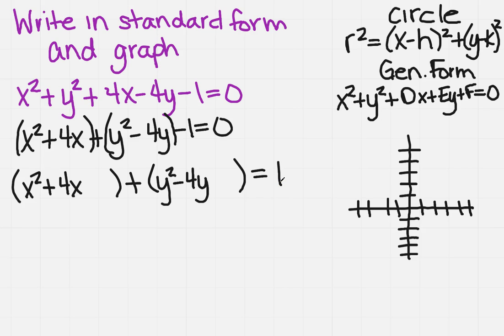Now, in order to complete the square, remember we take half the b term, which is 2, and then I'm going to square that. And I'm going to do the same thing over here. Half of 4 is 2, and I'm going to square that.